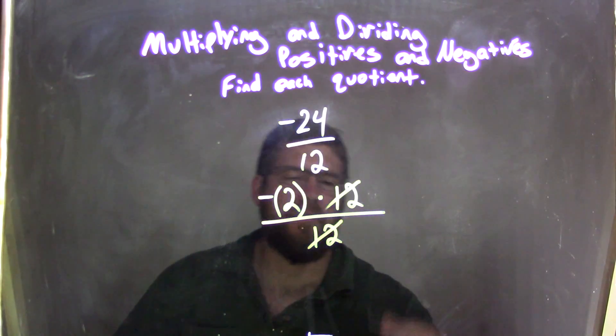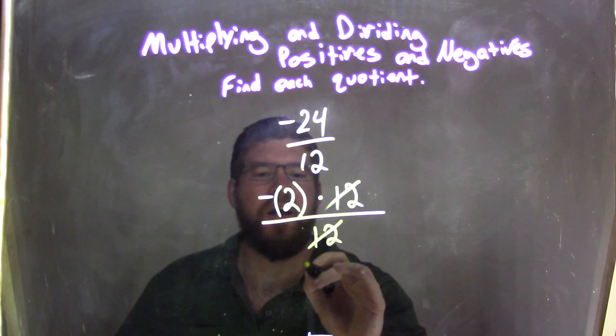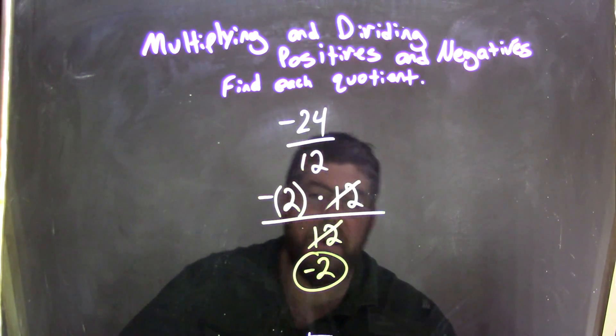12 goes into 12 perfectly. It's the same numbers there, and we're left with just negative 2 in the numerator, and that is our final answer.